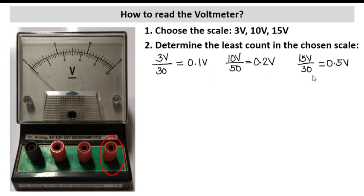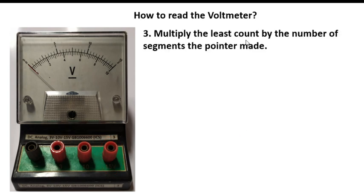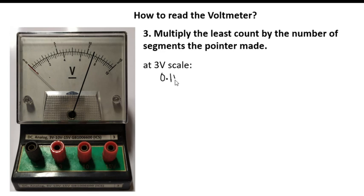Once you know the least count, you can now multiply the least count by the number of segments the pointer made. For example, our pointer points at a certain location. For the 3 volt scale, the least count is 0.1 volt. We multiply this by 22, because our pointer points on the 22nd line using the divisions in our 3 volts scale. So our reading is 2.2 volts.